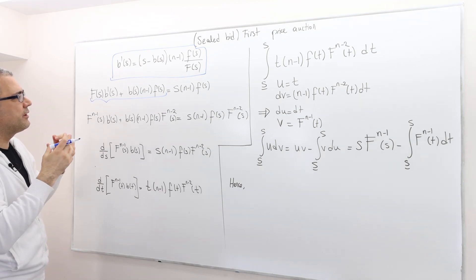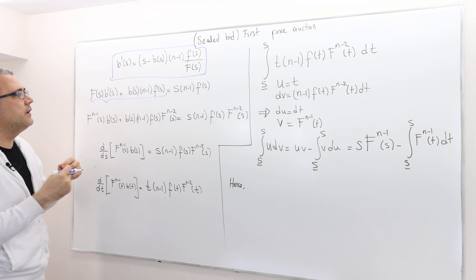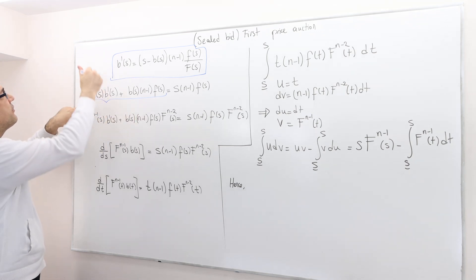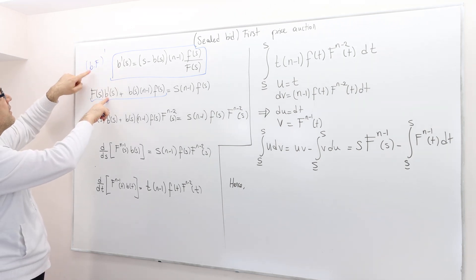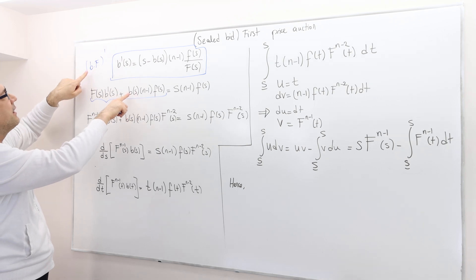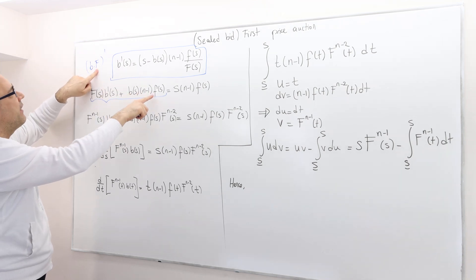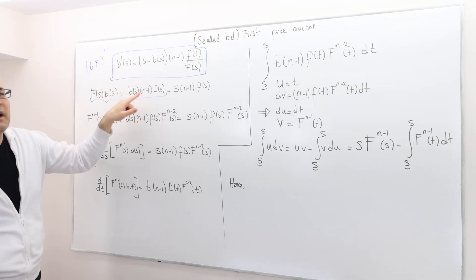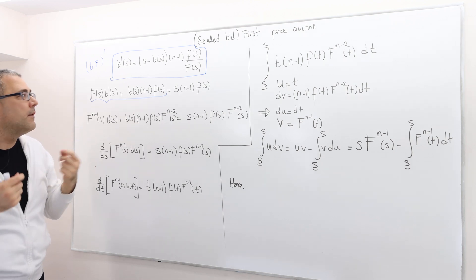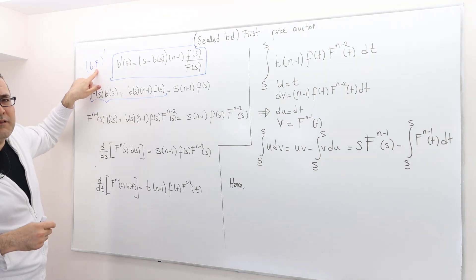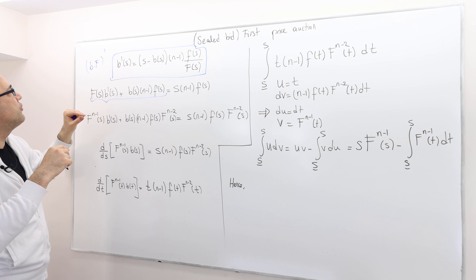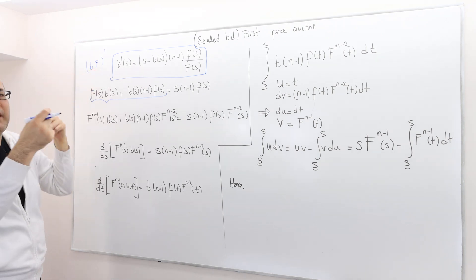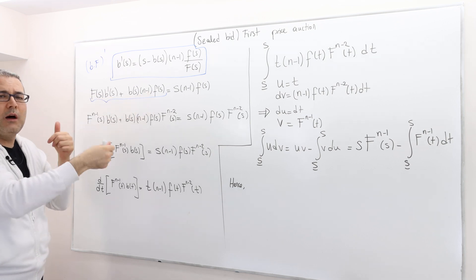When you look at this, you basically get a hunch about what the next step is. This is very much like the derivative of b times F — I take the derivative of b first, multiply it by F, and then take the derivative of F and multiply it by b. But the thing is, we have this n minus 1 term. Where is this coming from? Well, when I take the derivative of F, it should be some sort of F to the power n minus 1, and so n minus 1 is probably coming from there.